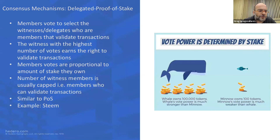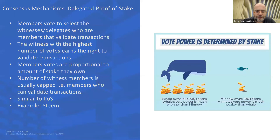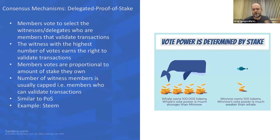Delegated proof of stake is an evolution of proof of stake where members of the network vote to select who they want to validate transactions. Those with the highest amount of votes earn the right to validate transactions and put them onto the blockchain or DAG. It's fairly similar to proof of stake, but the network has the ability to elect validators or delegate their voting to somebody else. There are pros and cons, as with any consensus algorithm.